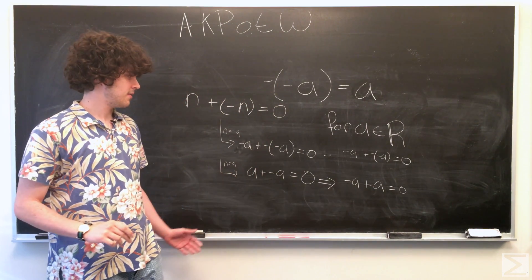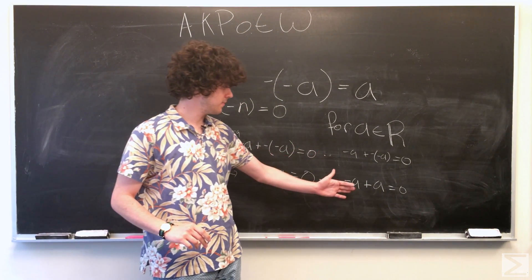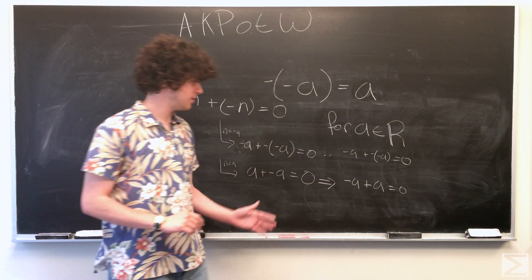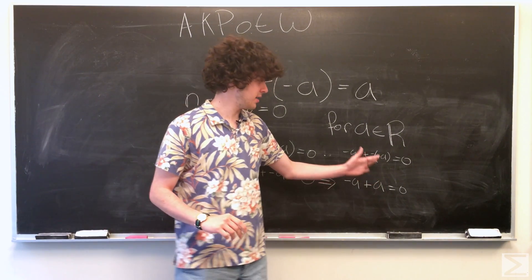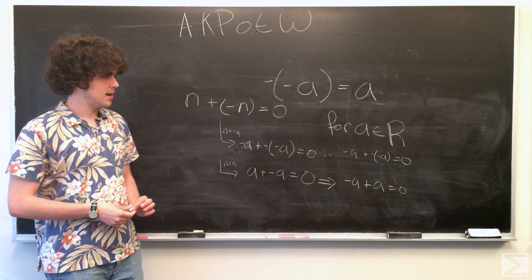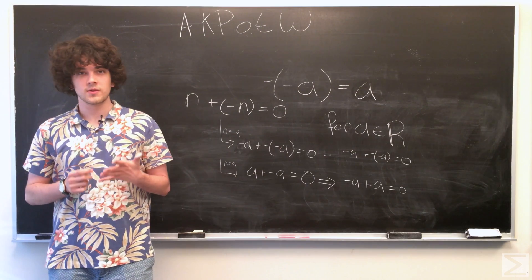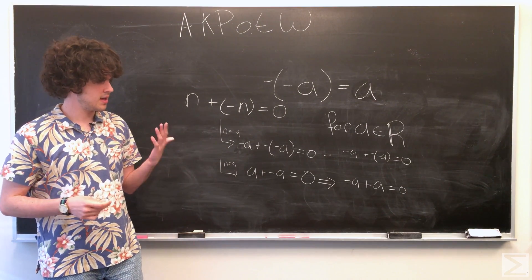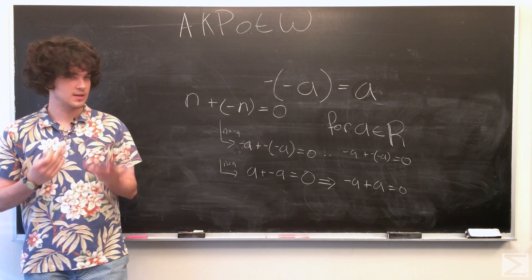So now this means that for negative a, we have two additive inverses, which are a and negative negative a. And since additive inverses are unique, that means that a has to equal negative negative a.